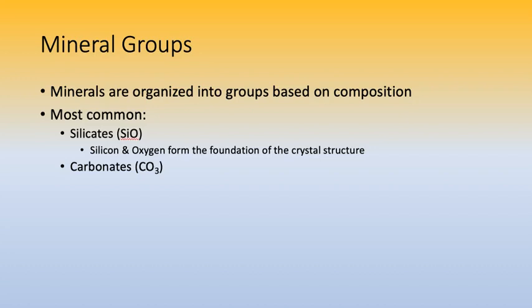A second mineral group worth mentioning are the carbonates, which always include calcium and oxygen in their chemical formula. These are very common in sedimentary rocks. So the silicates and the carbonates are the two most important mineral groups in terms of the minerals that make up the rocks found on and below Earth's surface. Especially for igneous rocks, the silicates are of great importance — they include common minerals like quartz and the feldspars, which are in almost all igneous rocks.